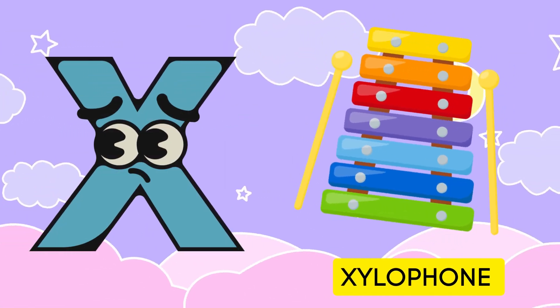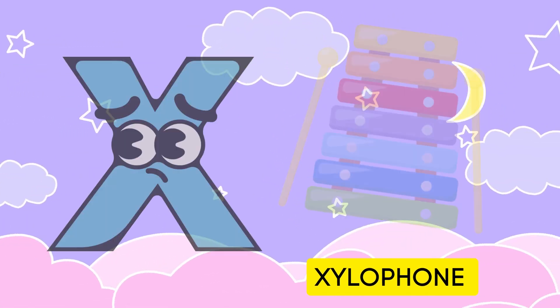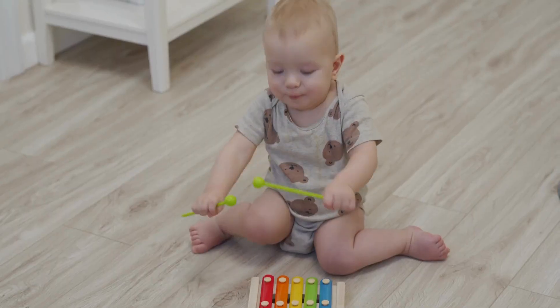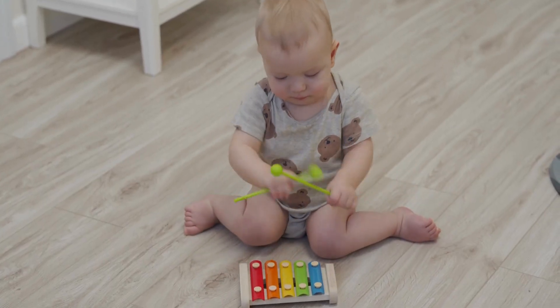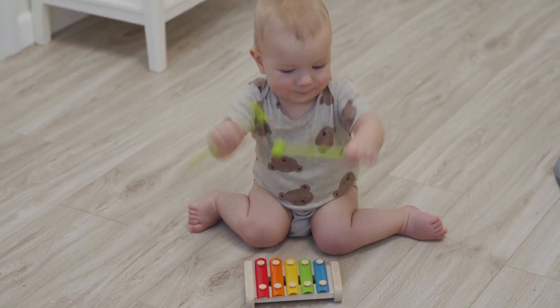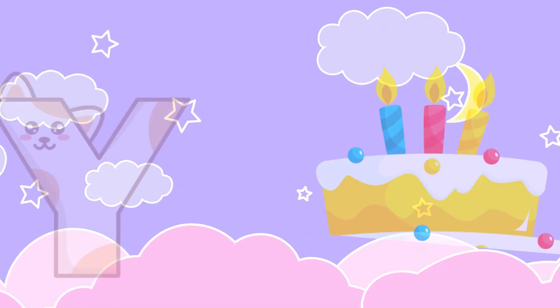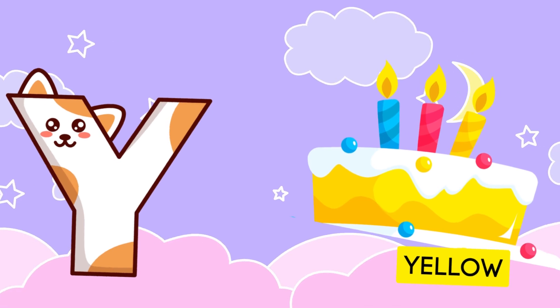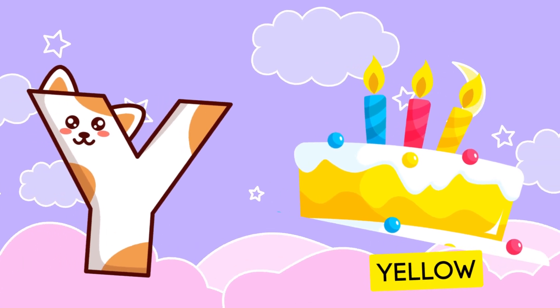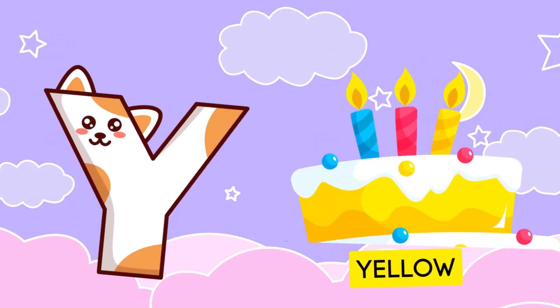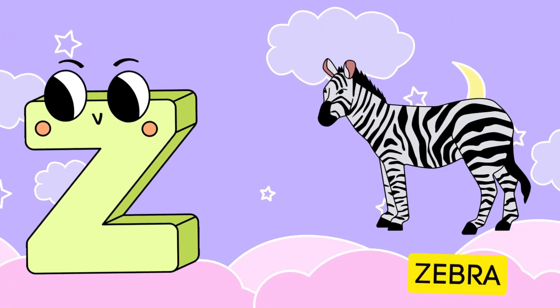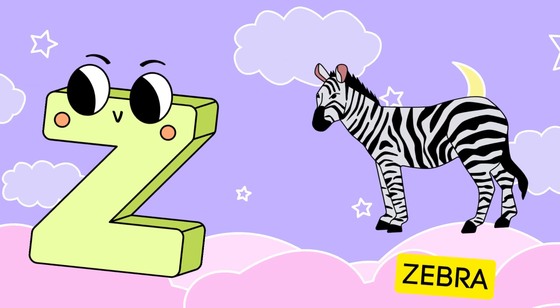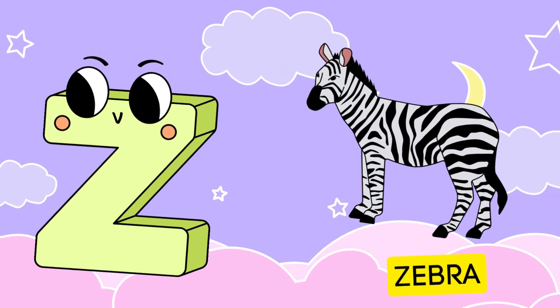z-z-xylophone. Y is for yellow, ye-ye-yellow. Z is for zebra, z-z-zebra.